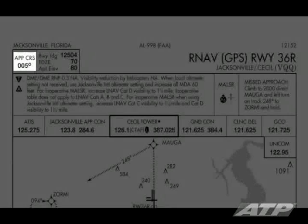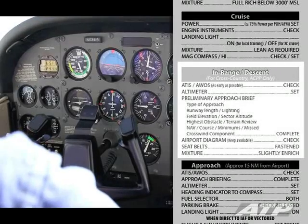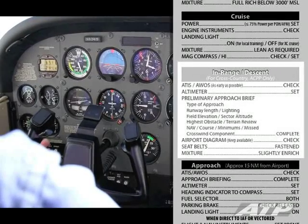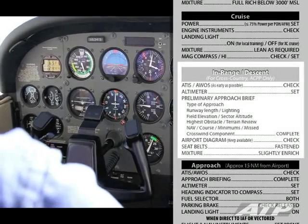Additional terrain on the missed approach segment. NAV mode selector switch will be in GPS mode. Final approach course of 005 degrees with LNAV MDA of 460 feet and one statute mile. Missed approach will be flown in GPS mode. Slight left crosswind. Preliminary approach brief complete.